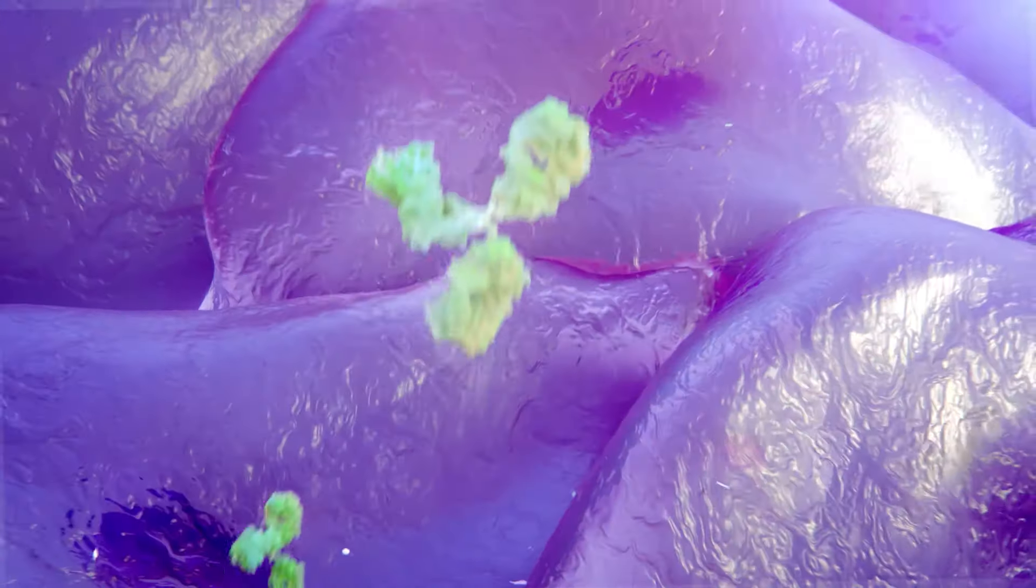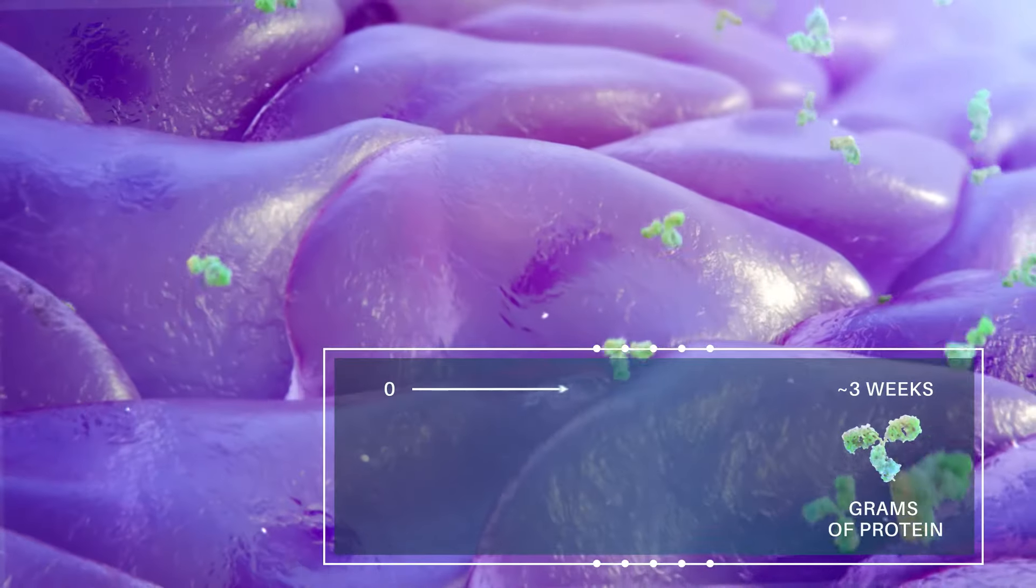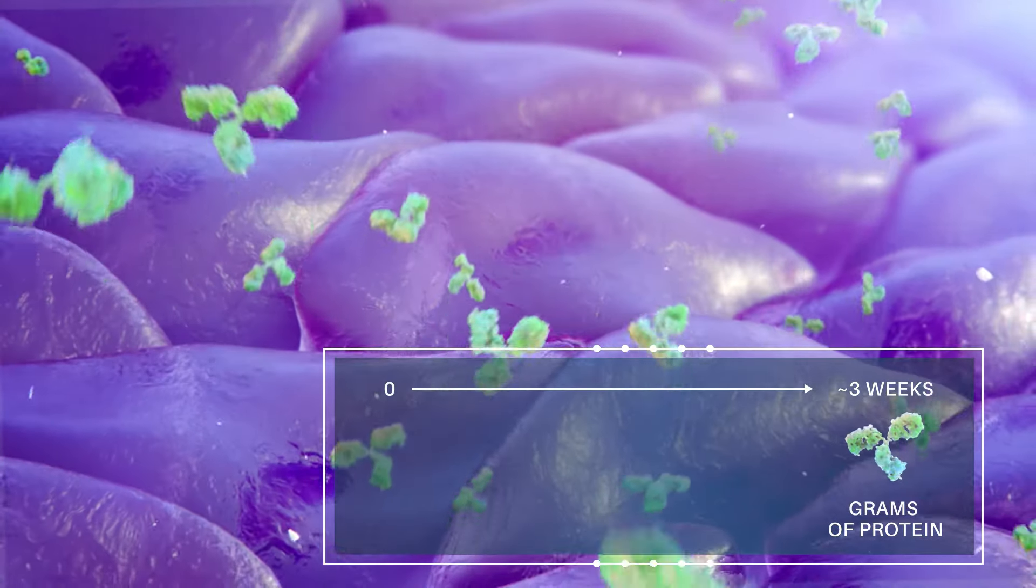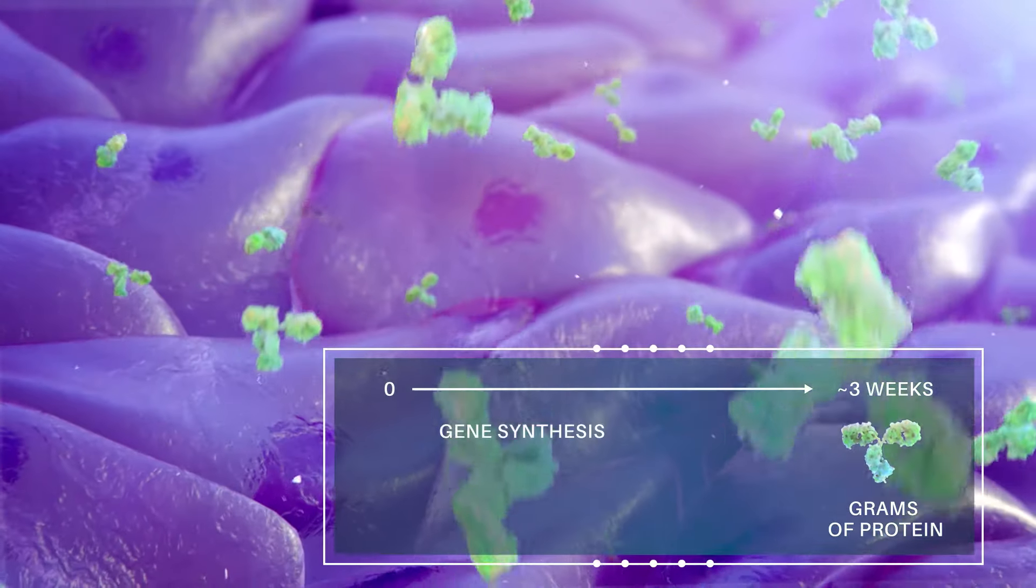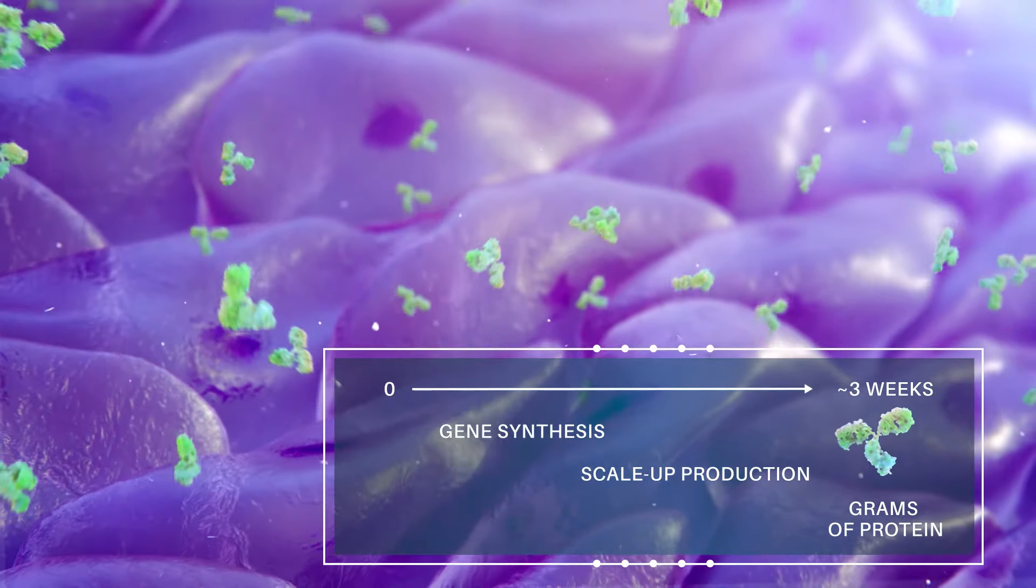Genscript have developed a TGE system in CHO-K1 cells that can yield grams of protein in as little as three weeks, including gene synthesis and scale-up production, enough to fast-track preliminary testing without the need for a stable cell line.